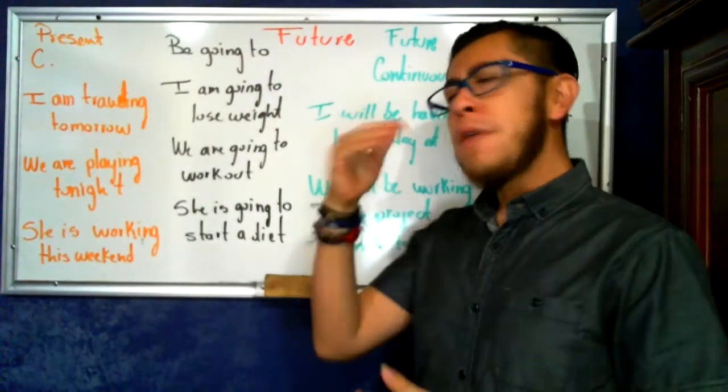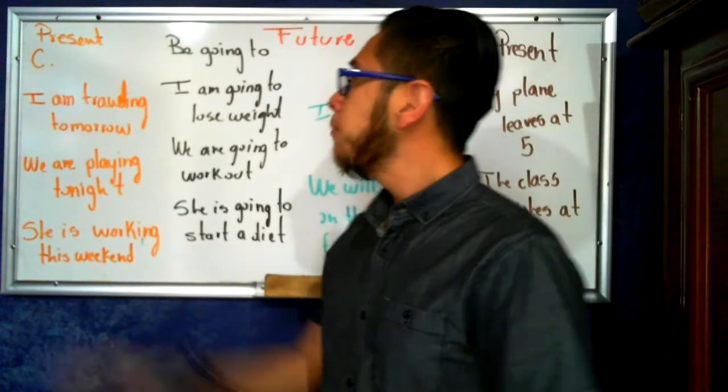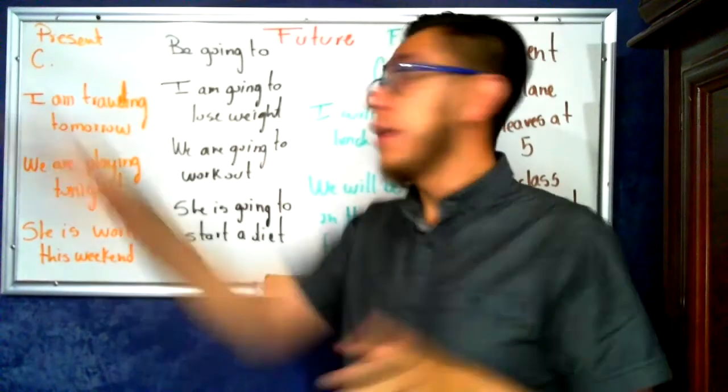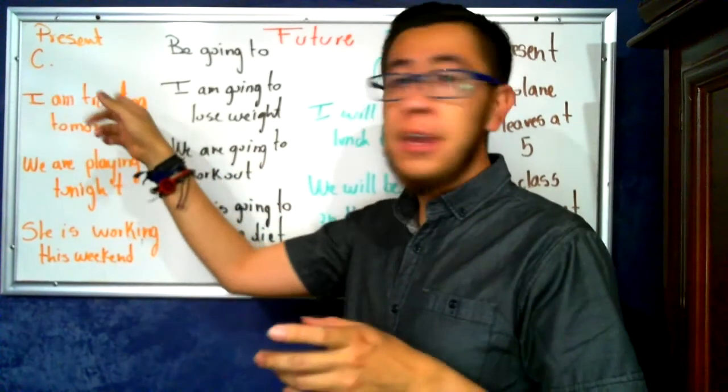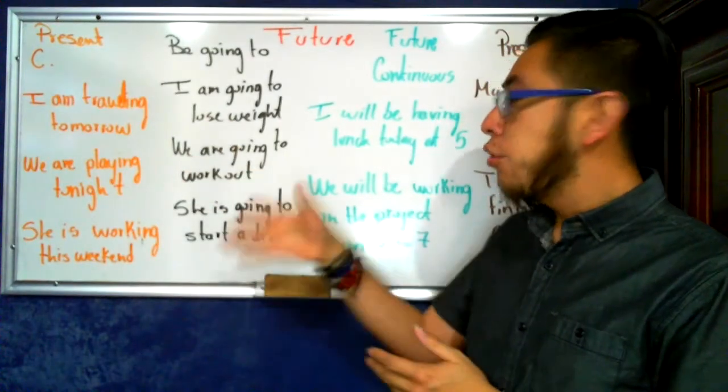Present continuous for future arrangements. What is this? Simple. For example, I have to set a phrase in present continuous that is subject, verb, and ing. For example, I am traveling, we are playing, or she's working.